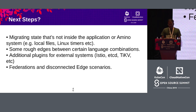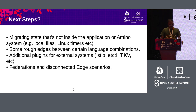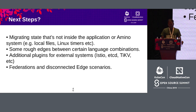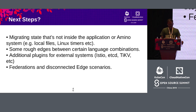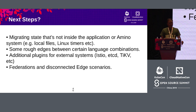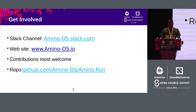Regarding next steps, it's still early — we have a lot of ways we'd like to extend Amino Run. Today microservice migration only works for state stored inside microservices, but local files and dynamic state are not yet migrated. We need to support more languages; with GraalVM support we're going to extend that. We want to build more deployment managers to integrate with external systems like load balancers, Istio, etcd, and TiKV. We also need to build good edge applications and verify everything works on KubeEdge rather than normal Kubernetes. Feel free to get involved — this is already open source, with a Slack channel, GitHub repo, and website.